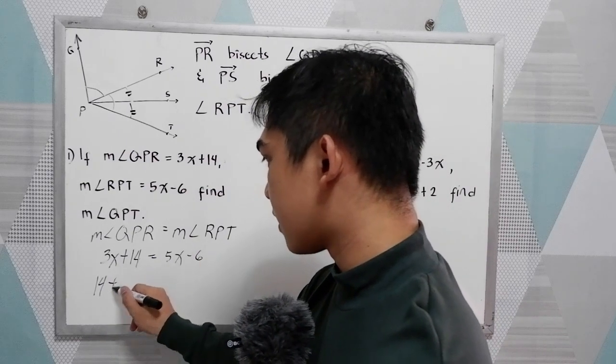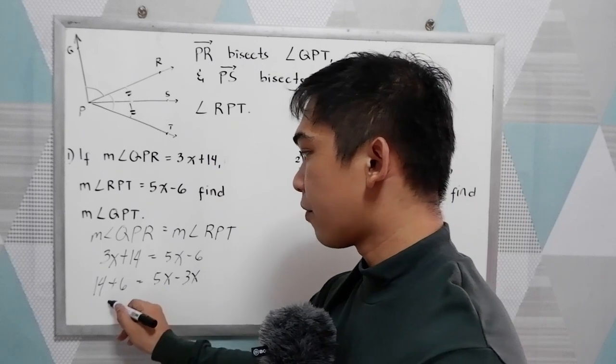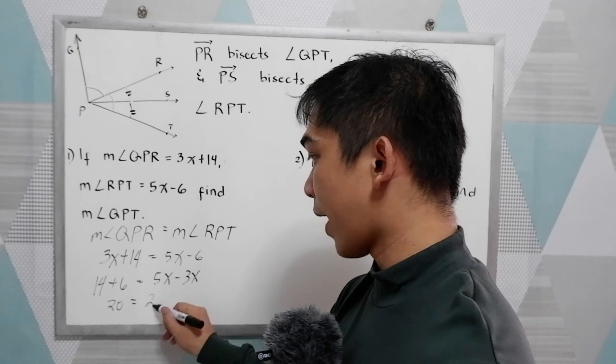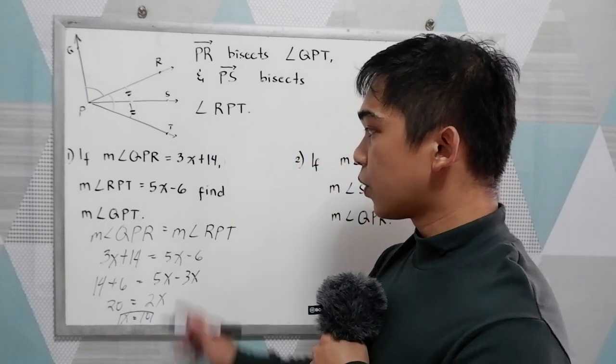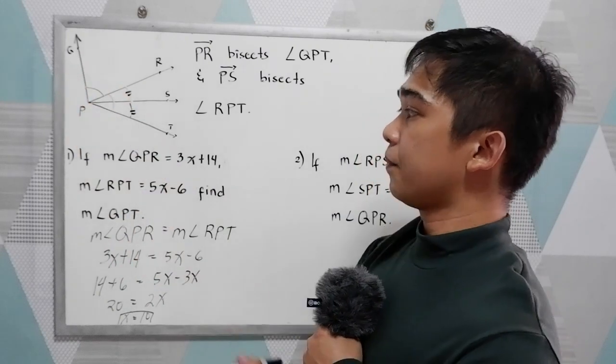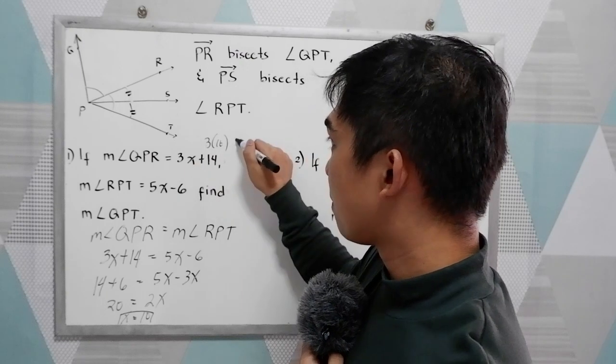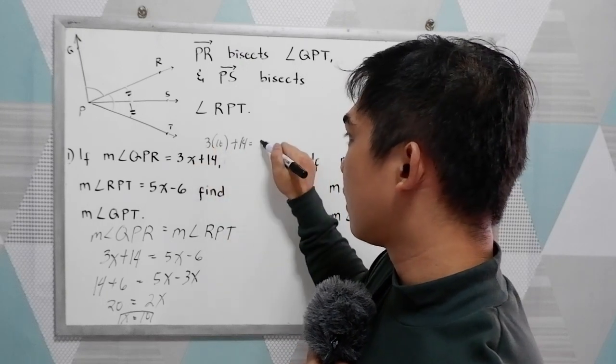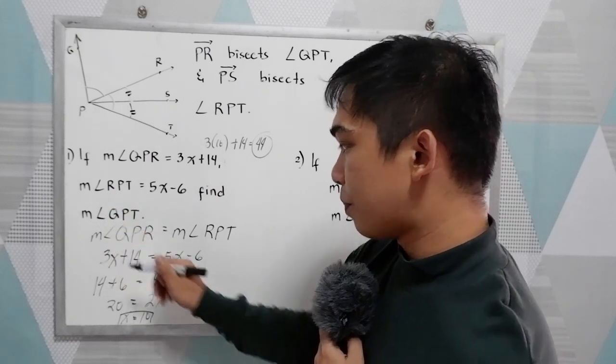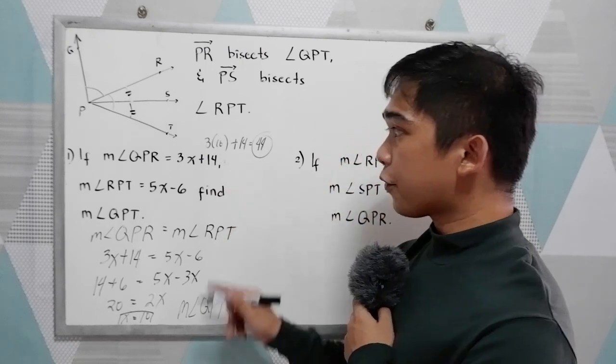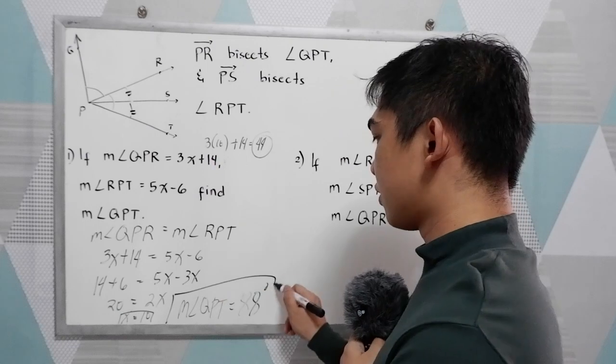Now let us solve for X using addition property of equality. So 14 plus 6 equals 5X minus 3X, so we have 20 equals 2X. Divide by 2, X equals 10. Since X equals 10, we're going to find angle QPT. We know that X is 10, so we have 3 times 10 plus 14, which gives us 30 plus 14, which is 44 degrees. If angle QPR is 44 degrees, therefore angle RPT is also 44 degrees. Now angle QPT equals 44 plus 44, so we have 88 degrees as the final answer.